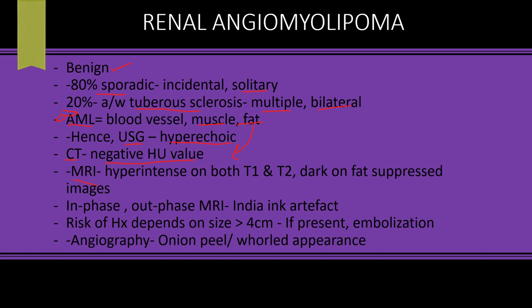On MRI, fat is white on both T1 and T2, so it will be hyperintense. On fat-suppressed images, the fat component gets suppressed and will appear dark. When we do in-phase and out-of-phase MRI — which is performed for fat-containing lesions — fat is identified by the India ink artifact or chemical shift artifact.